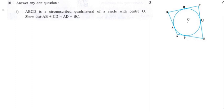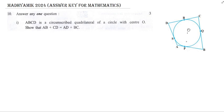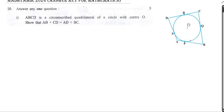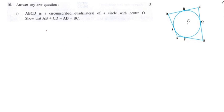Now this is your question. ABCD is a circumscribed quadrilateral of a circle with center O. This is the circumscribed quadrilateral with vertices A, B, C, D — shown here in red for better understanding. The question asks us to show that AB plus CD is equal to AD plus BC.